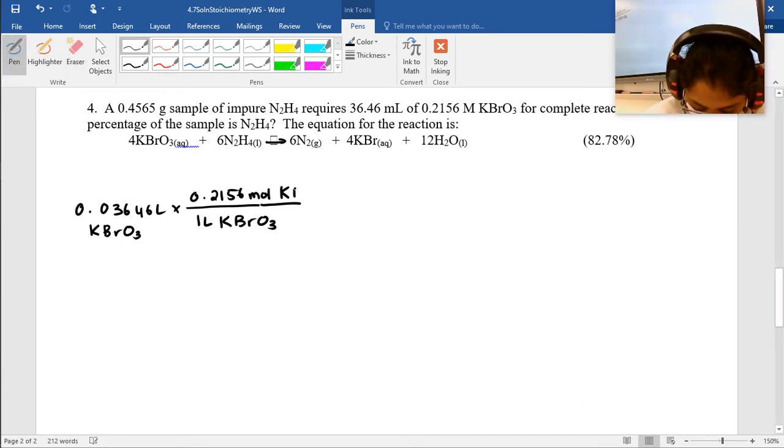Moles of KBrO3. That's why it looked weird. So liters of KBrO3 and liters of KBrO3 cancel out. Now I am left with the moles of KBrO3.